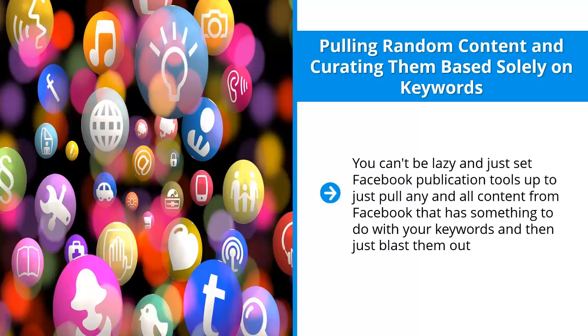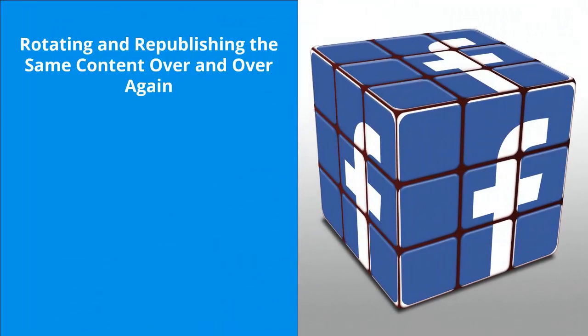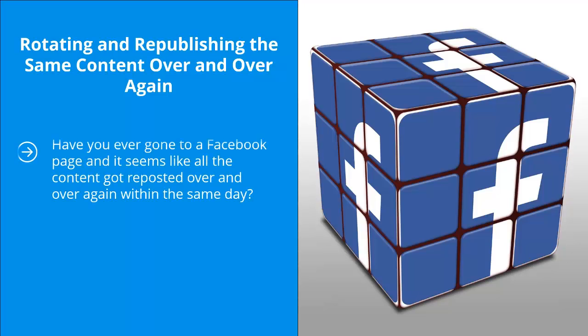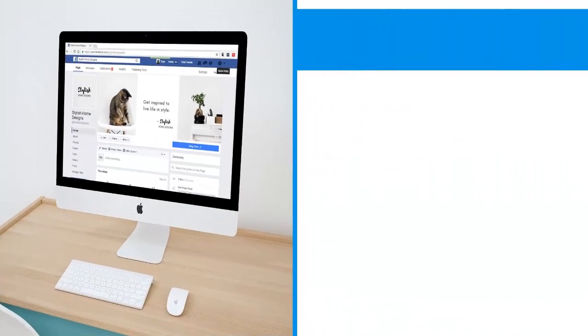Mistake six: rotating and republishing the same content over and over again. Have you ever gone to a Facebook page and it seems like all the content got reposted over and over again within the same day? The idea is that the more Facebook audience members see the content, the more likely they will click. But it looks like you're just spamming your page fans — don't be surprised if they unlike your page.